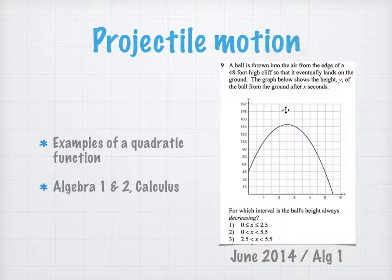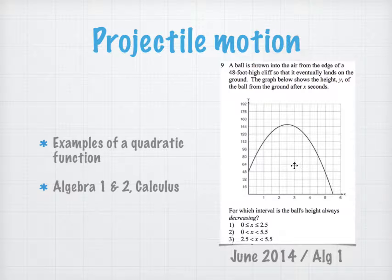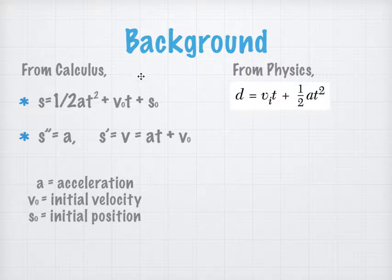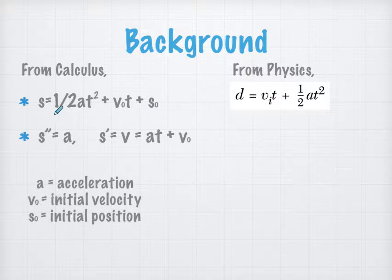In this question on the right-hand screen, a ball is thrown into the air from the edge of a 48-foot high cliff so that it eventually lands on the ground. This question is from the June 2014 Algebra 1 exam. From calculus, we know that position equals one-half a·t² plus initial velocity times time plus initial position. Here, S double-prime is the acceleration and the first derivative is the velocity.